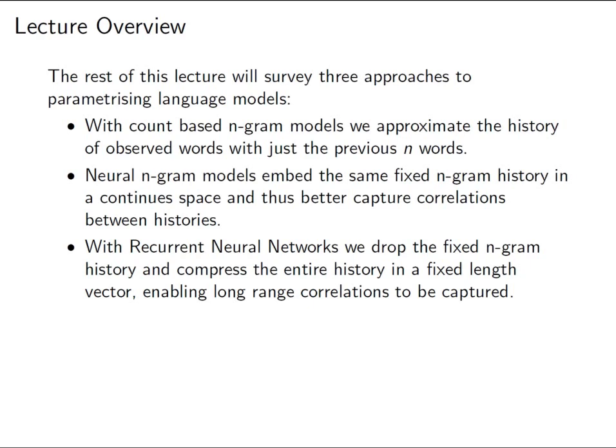That's the intro — some history, background, evaluation and data. Now let's talk about models. We're going to start with simple count-based n-gram models, then move to neural n-gram models, which add a neural network flavour, and finally recurrent neural network language models, which free us from the approximations we make about conditional distributions and allow us to capture longer-range dependencies.